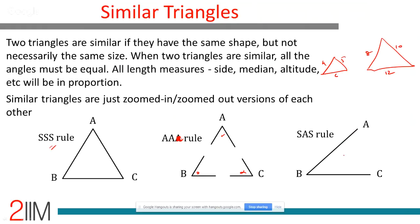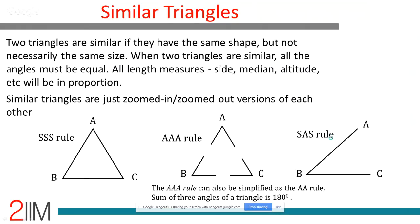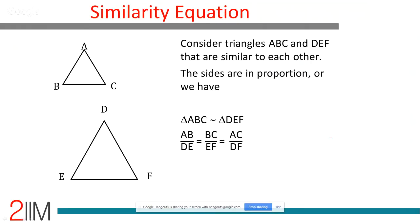The SAS rule for similarity: two sides in the same proportion (e.g., 8:10 and 4:5) and the included angle equal — then the triangles are similar. Once similarity is established, every side metric will be in the same proportion and every angle metric will be equal. It's very vital to know that.